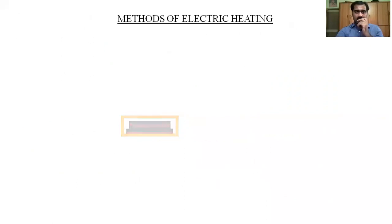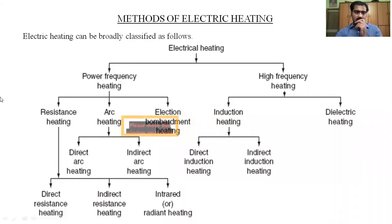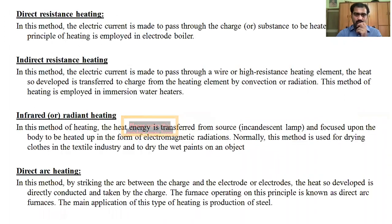We did some problems on heating element design. Most of the design is calculated according to heat dissipation produced by Stefan's law. Our next topic is the methods of electrical heating. In the previous classes, we saw how these methods are broadly classified based on power frequency and high frequency. Power frequency heating is classified into three types: resistance heating, arc heating, and electron bombardment heating. In the high frequency category, we have induction heating and dielectric heating.